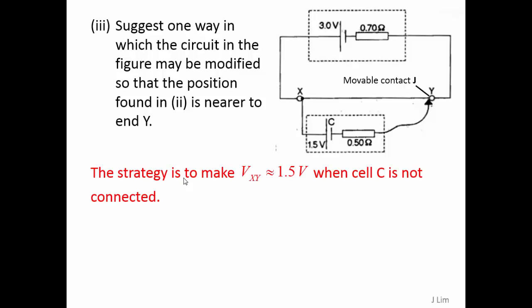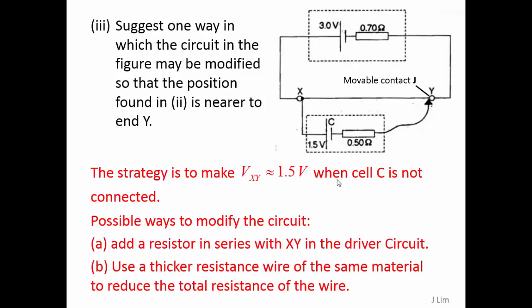The strategy is to make the potential difference between X and Y as close to 1.5 volts as possible when cell C is not connected. Possible ways to modify the circuit include adding a resistor in series with XY in the driver circuit, or using a thicker resistance wire of the same material to reduce the total resistance of the wire XY.